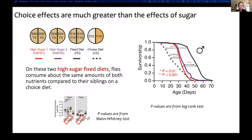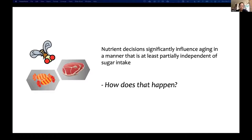We tested whether the choice lifespan effects are simply from differences in sugar intake. The effects of the choice diet relative to the standard fixed diet are much bigger than those from homogeneous high-sugar diets. The lifespan and feeding data together imply that nutrient decisions significantly influence aging in a manner that is at least partially independent of sugar intake. Our observations suggest that animals respond differently to micronutrients depending on how they are presented, and that the effects of choice on lifespan may be mediated by processes independent of micronutrient intake.